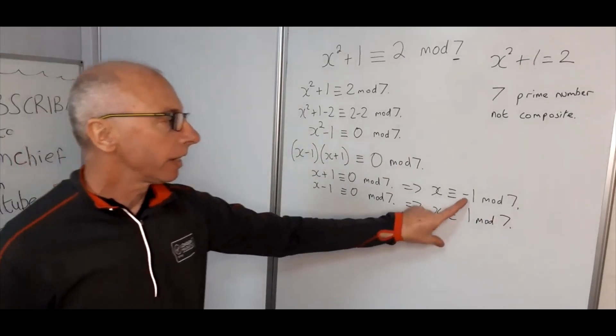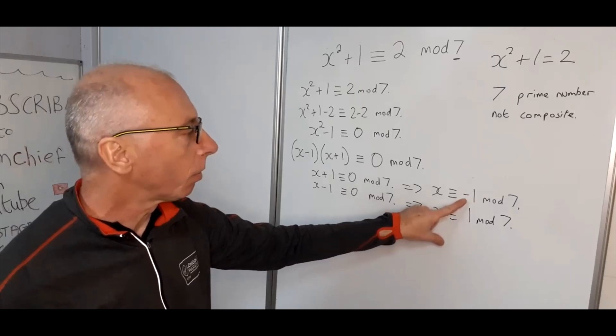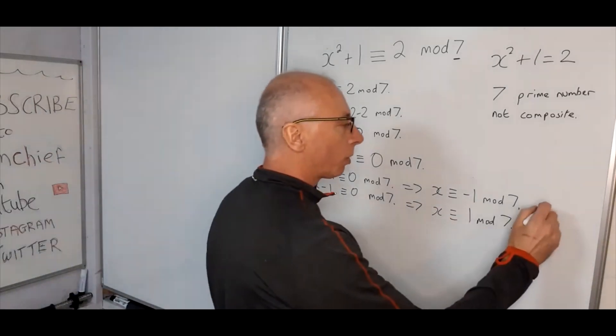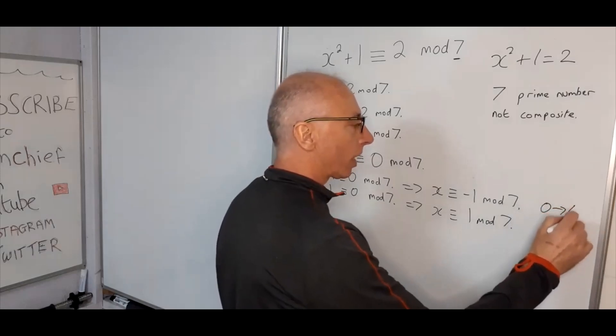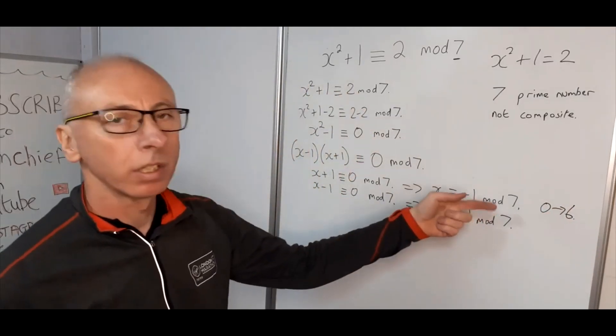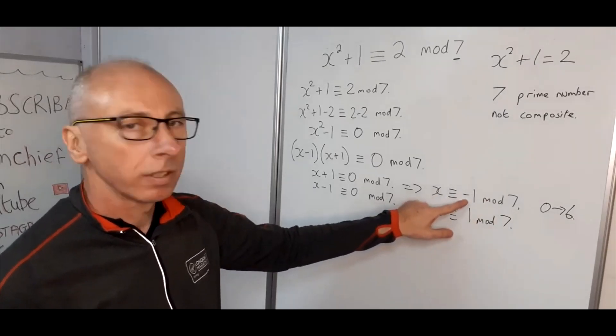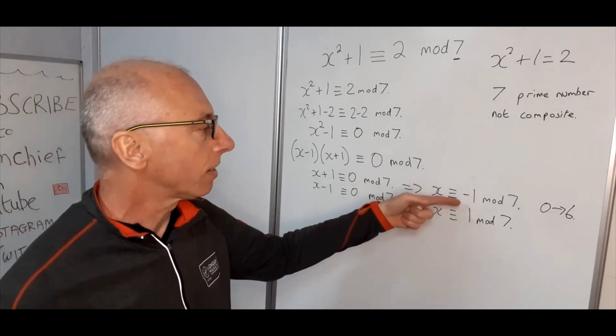Okay, now minus 1, yes this is a correct answer, but what we can do is try and improve on that. What we want is a number between 0 and 6 for our congruence to look in the form that we want with mod 7. So minus 1 mod 7 is actually 6.